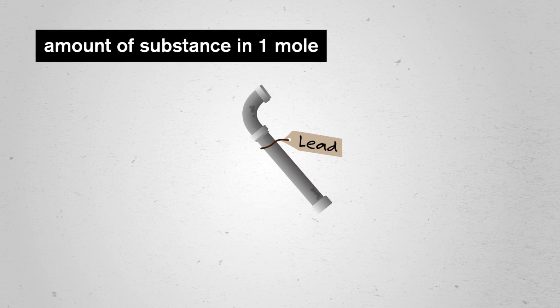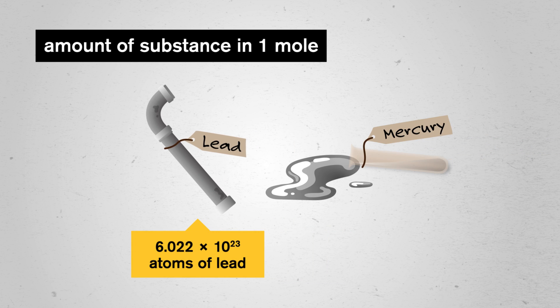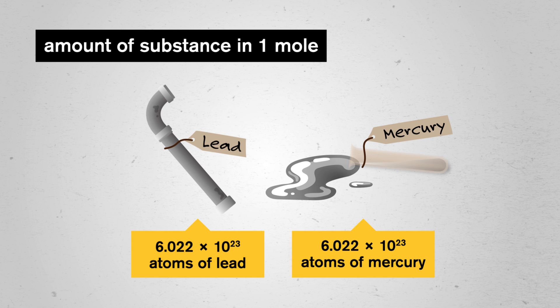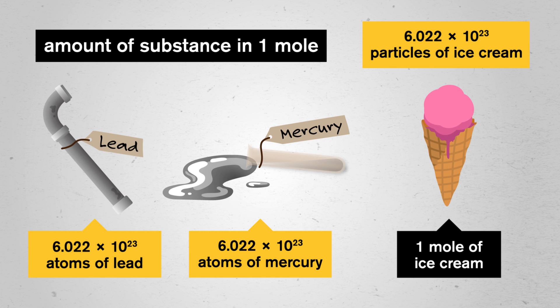One mole of lead is 6.022 times 10 to the 23rd atoms of lead. One mole of mercury is 6.022 times 10 to the 23rd atoms of mercury. Or, flipping it the other way, there are 6.022 times 10 to the 23rd particles of strawberry ice cream in one mole of that ice cream.